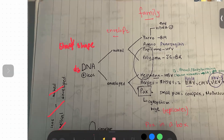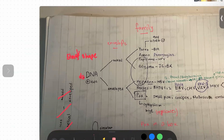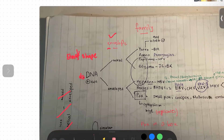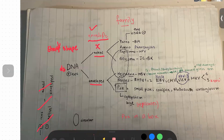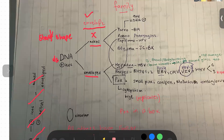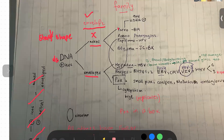Then we discuss what sort of envelope they have. If they don't have an envelope, we call them naked viruses. And if they have a cover, we call them enveloped viruses. They are further divided into families, and the mnemonic is PAP and HHP.